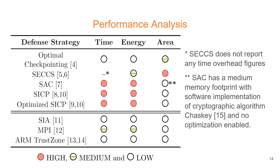Memory isolation techniques offer much better performance, as they do not require encryption or decryption of checkpoints, save for MPI which relies on a software-based hypervisor. Even though MPI's overhead of checkpointing is very low, it entails a significant overall overhead due to its computationally heavy hypervisor calls, in the case of applications with a high number of dynamic jumps and no optimization enabled.